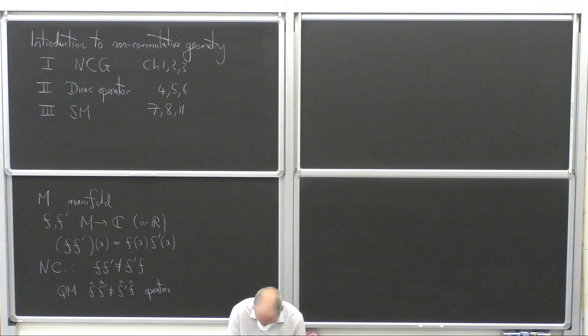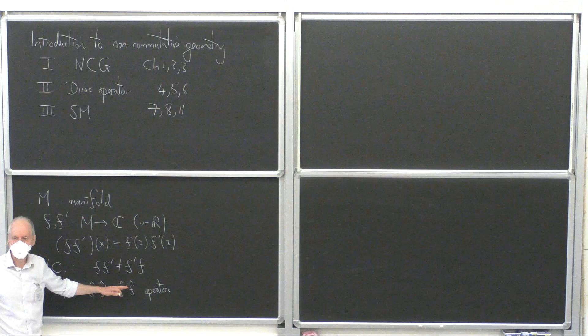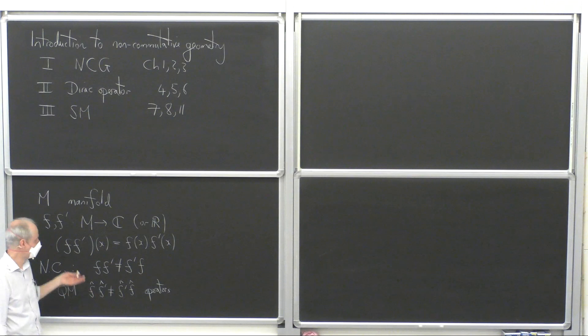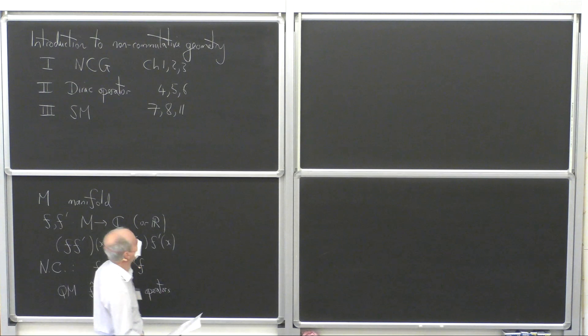One thing that's common is that in quantum mechanics we know there's no precise points in phase space because of the uncertainty principle, and a similar thing happens in non-commutative geometry. Because of the non-commutativity you don't have points in the manifold, so the idea of a manifold as a set of points is somehow lost and you have to be more abstract.